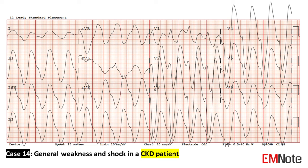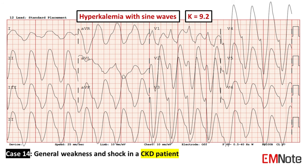Case 14: The patient is a CKD patient presenting with general weakness. The ECG shows a sine wave pattern, which is compatible with severe hyperkalemia. In a sine wave pattern, the QRS complex, T wave, and P wave all merge together to form a single smooth wave. The presence of a sine wave pattern on an ECG is a medical emergency. Treatment of hyperkalemia includes calcium gluconate, sodium bicarbonate, insulin with glucose, diuretics, and hemodialysis.